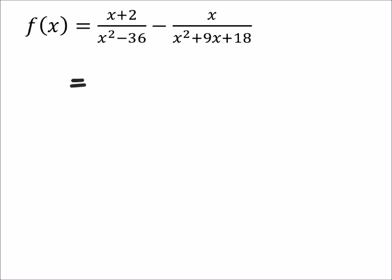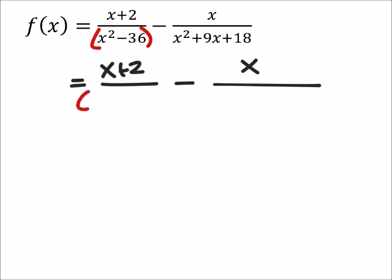Now this is not going to affect the numerator, so I still have an x plus 2, and then I've got a minus an x over something. And in red here, we'll do that x squared minus 36 in red. Those are two perfect squares, and it's a difference, so I've got an x minus 6 and an x plus 6. x squared plus 9x plus 18, I'm going to do that in purple, so x squared.